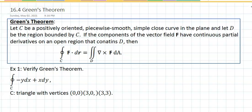Section 16.4 talks about Green's Theorem and this is what the theorem says: let C be positively oriented, that's positive orientation, that's negative orientation, piecewise smooth, simple, closed curve. It must be closed in the plane.